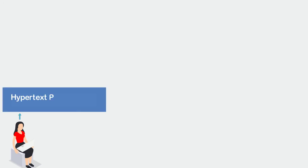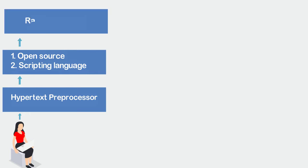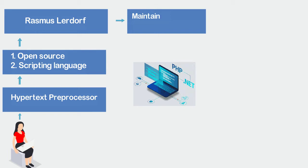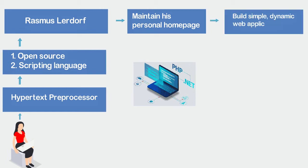What is PHP? PHP means Hypertext Preprocessor — a widely used open-source general-purpose scripting language that is specially suited for web development and can be embedded into HTML. It was originally created by Danish-Canadian programmer Rasmus Lerdorf in 1994. It began when he wrote several common gateway interface programs in C to maintain his personal home page, then extended them to work with web forms and to communicate with databases. PHP could be used to build simple and dynamic web applications.